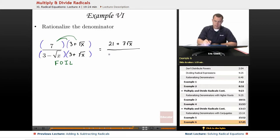On the bottom, we have 9 plus 3 times the square root of x minus 3 times the square root of x.